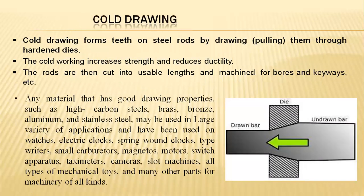The cold drawing process is performed at normal atmospheric temperature. The bar existing between the dies is drawn from the external side, decreasing its diameter. Materials include brass, high carbon steels, bronze, aluminum, and stainless steel. Applications include manufacturing of watches, spring wound components, typewriters, taximeters, cameras, and slot machines. This process plays a major role in changing dimensions from one shape to another.